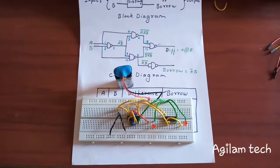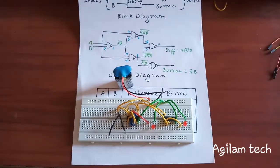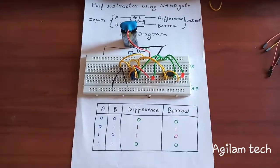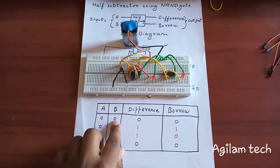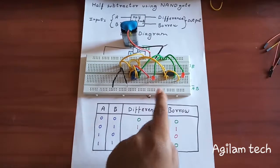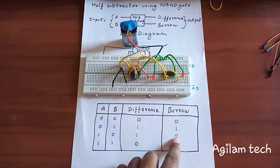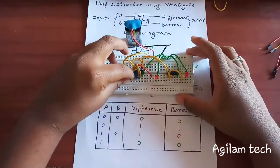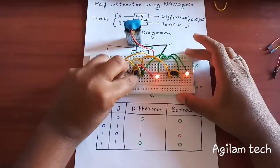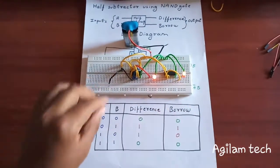As you can see, for inputs zero-zero, the difference is zero and borrow is zero. For inputs zero-one, the difference is one and borrow is one.